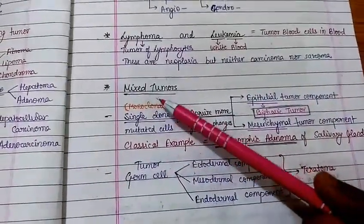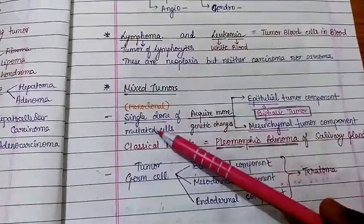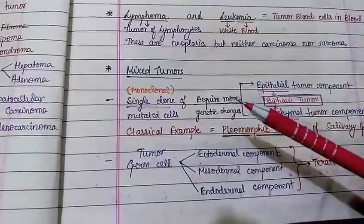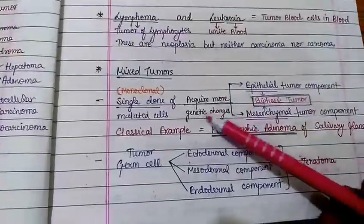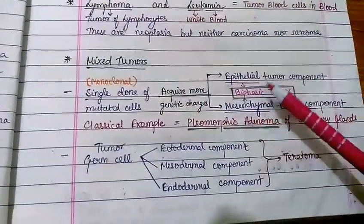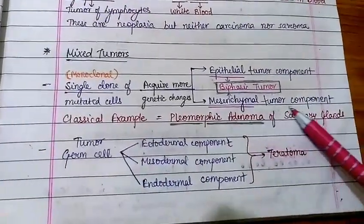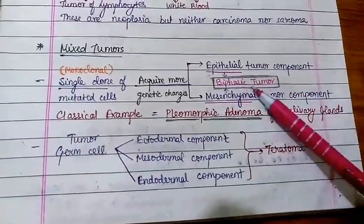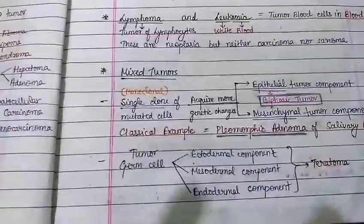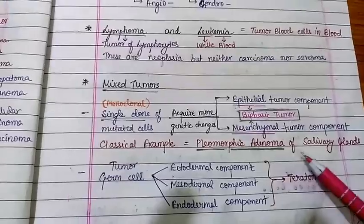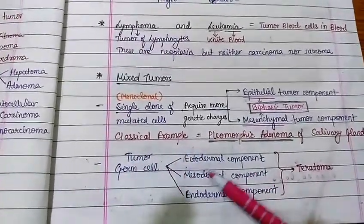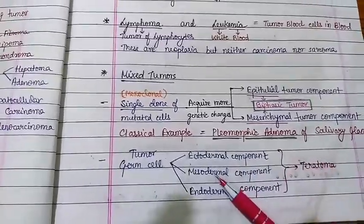Mixed tumors arise from a single clonal mutated cell — they are monoclonal — but they acquire more genetic changes and differences among themselves. An example is a biphasic tumor, which has both epithelial and mesenchymal tumor components. The classical example of a mixed tumor is pleomorphic adenoma of the salivary glands.